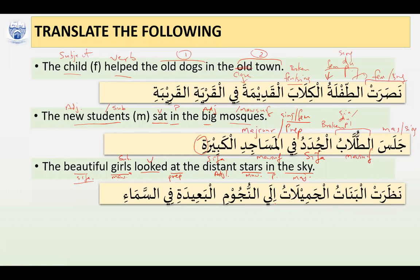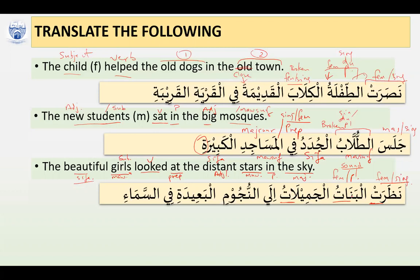We have 'Nazarat Al-Banatu.' Notice that Al-Banatu is a feminine plural, but we used a feminine singular form of the verb. Why? Once the subject is feminine — whether singular, dual, or plural — the verb is used in its feminine singular form. So we have 'Nazarat,' which has the Ta indicating femininity. The word 'girls' — Al-Banatu — is a sound plural referring to human beings, so the adjective can also be in plural form. We have Al-Banatu Jamilatu — perfect agreement between Mawsuf and Sifah.